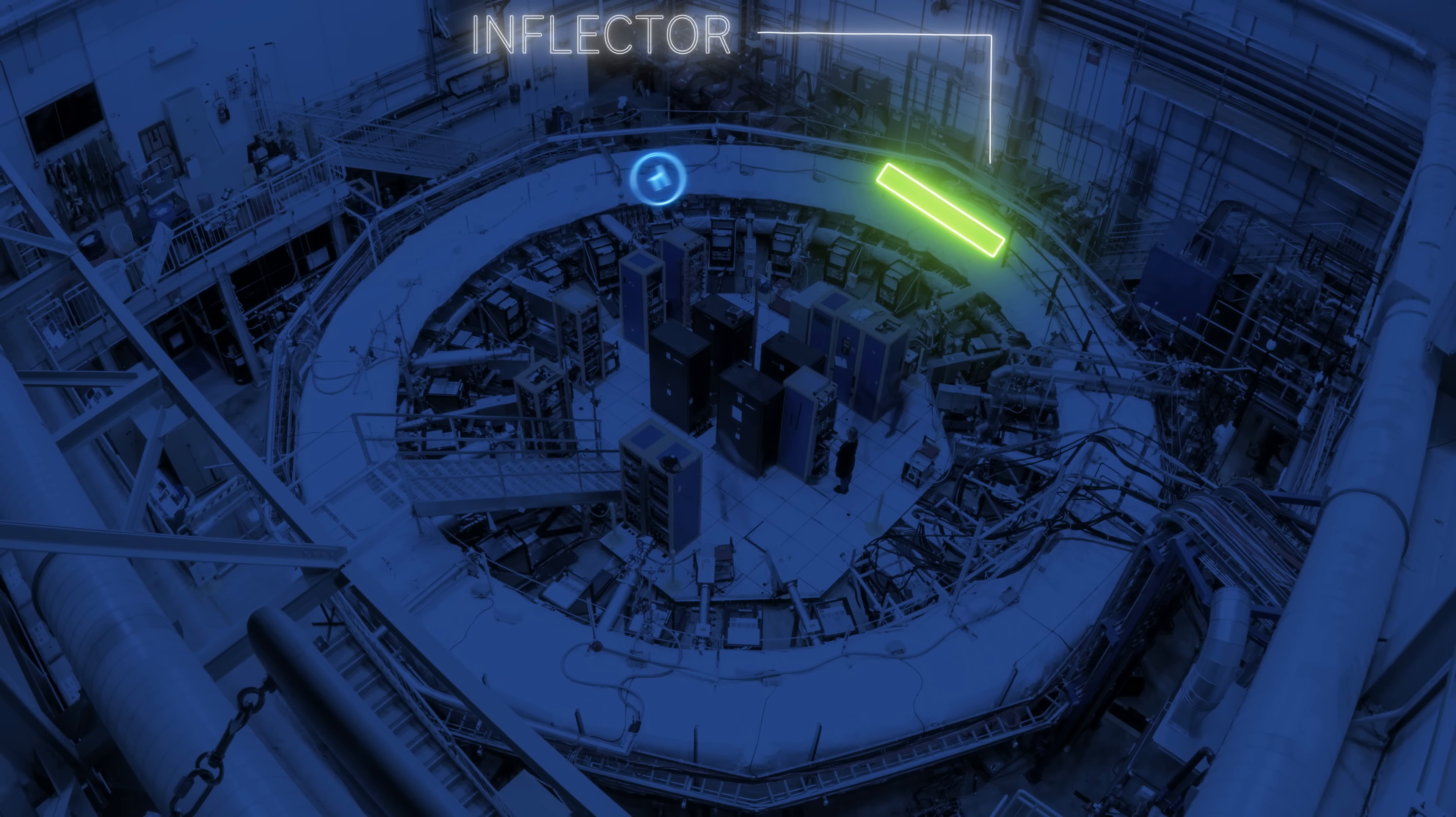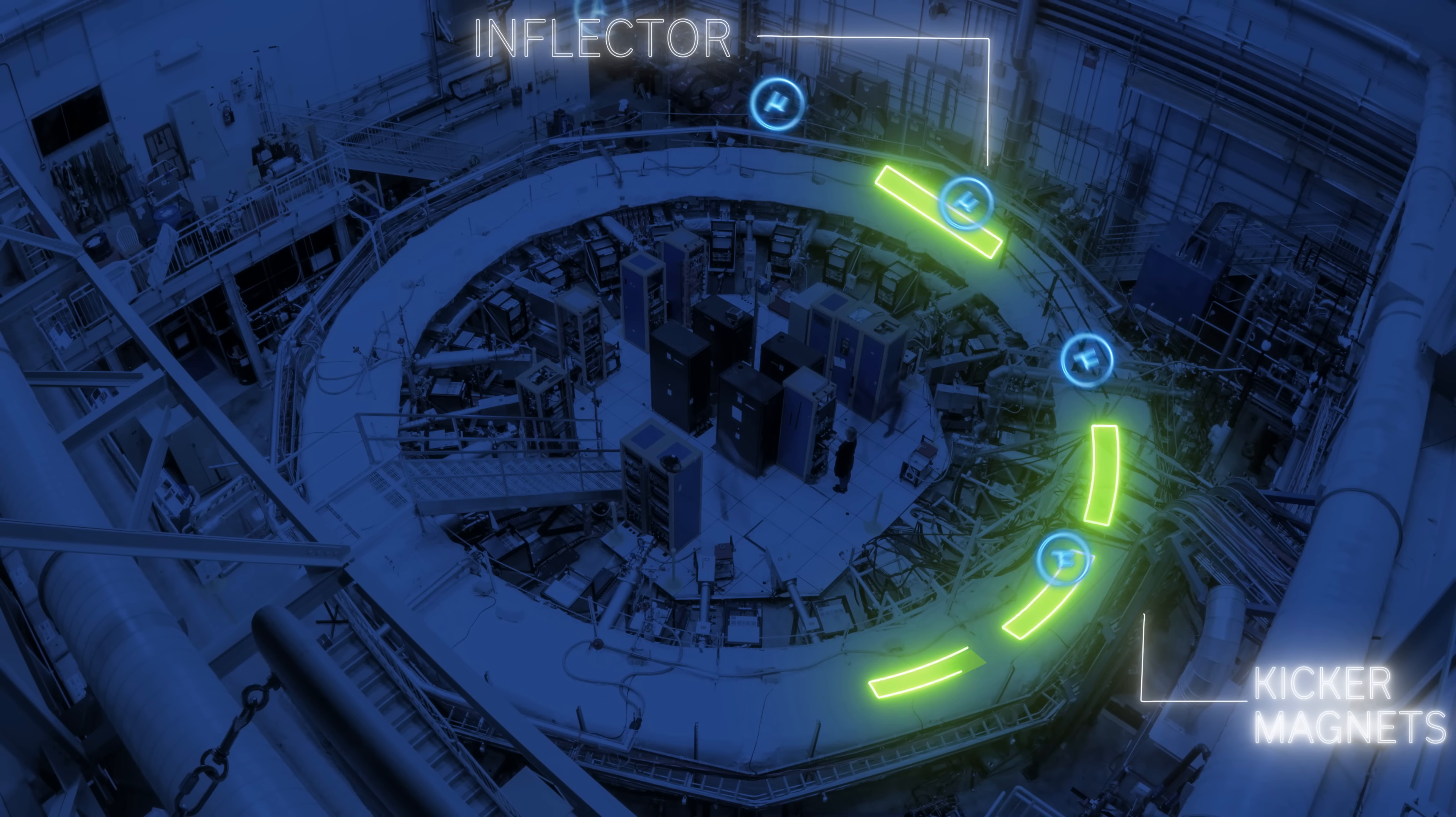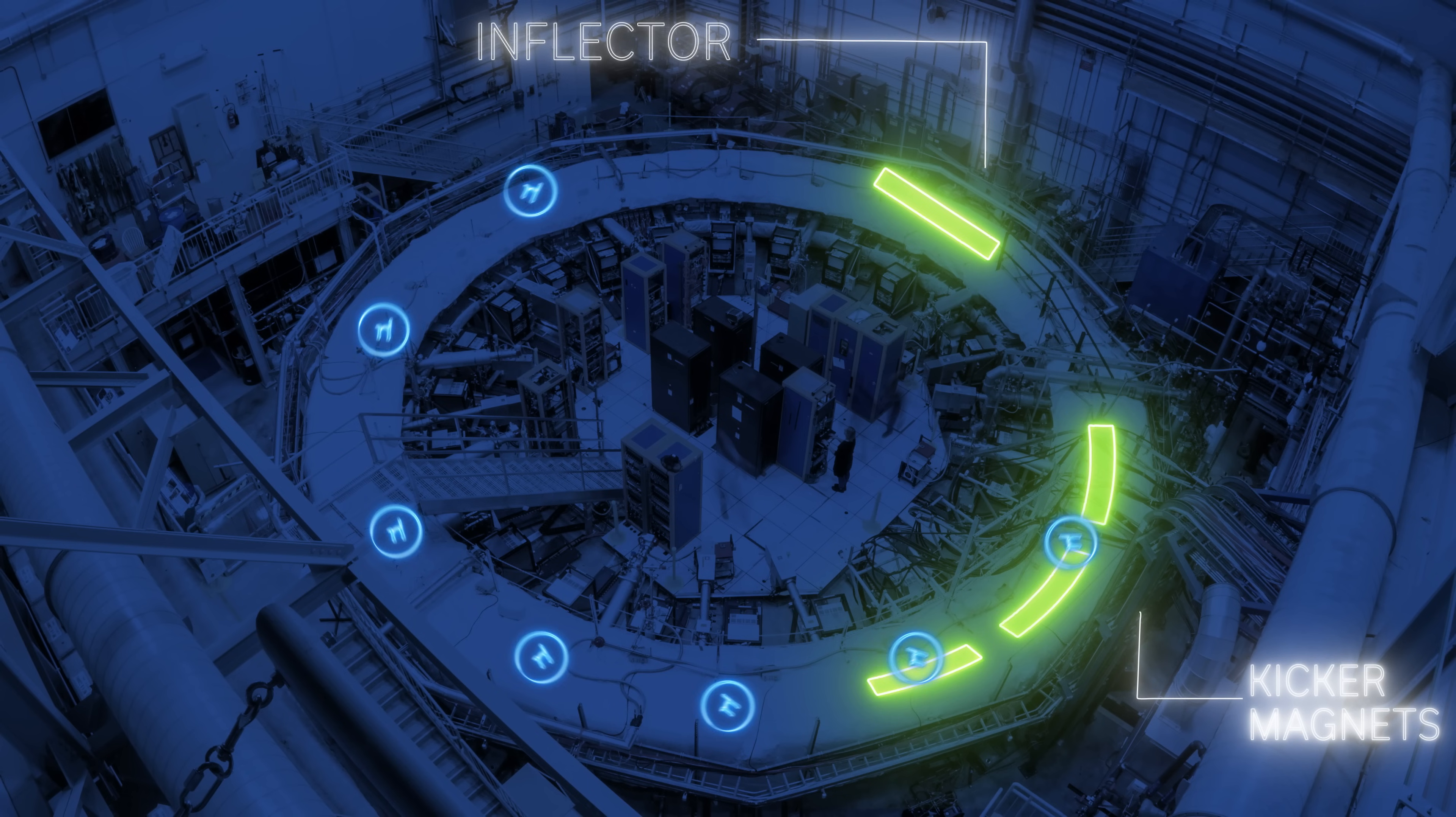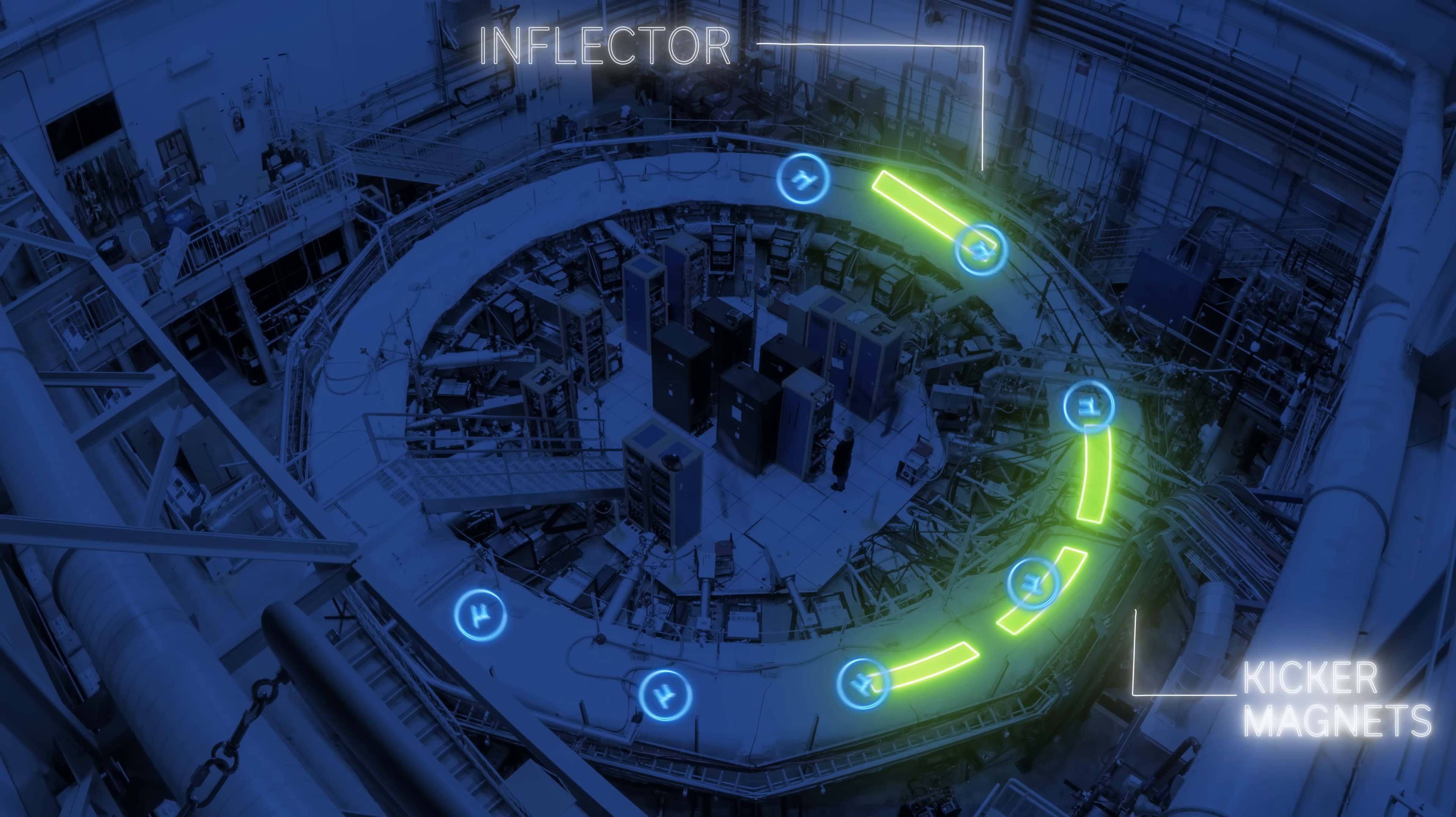But because they're injected slightly off center of our circular path, they get kicked by a series of three kickers that changes the trajectory of the muons so that they end up on a circular path that goes directly around the ring.